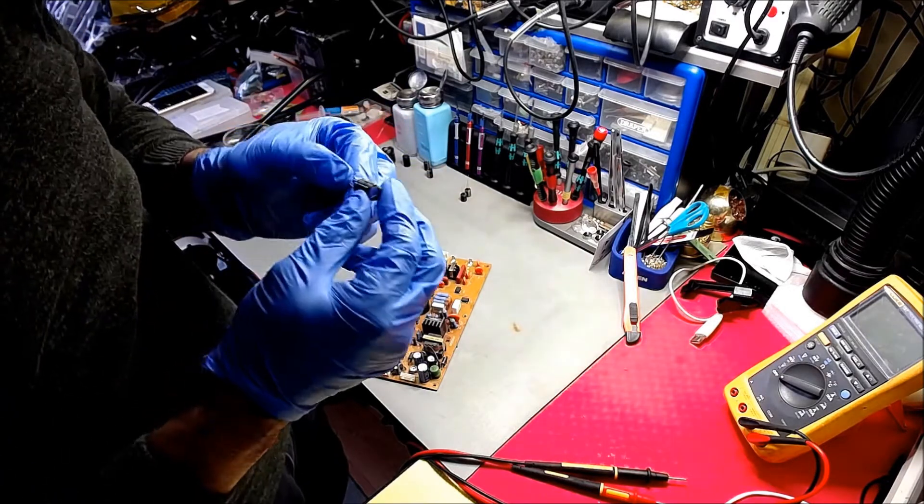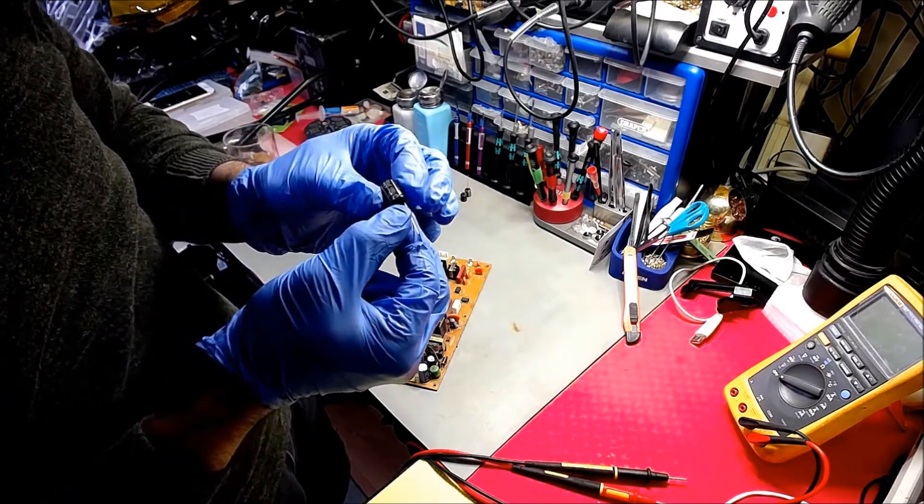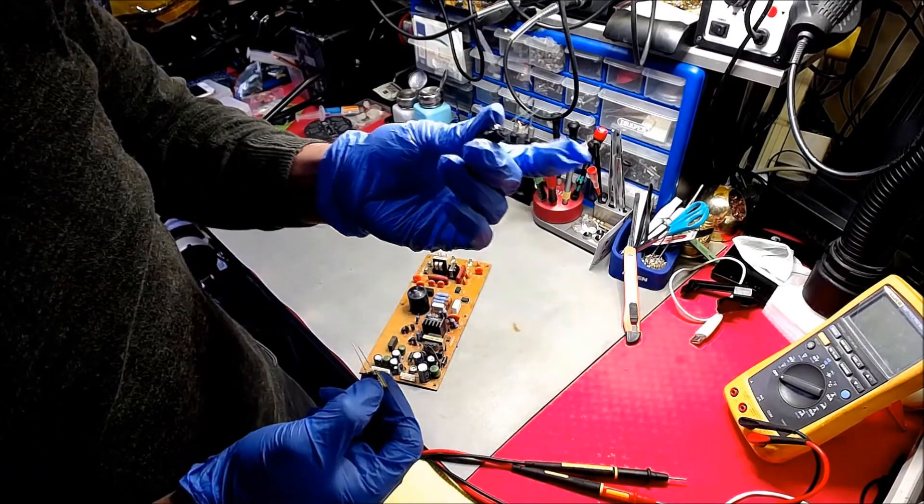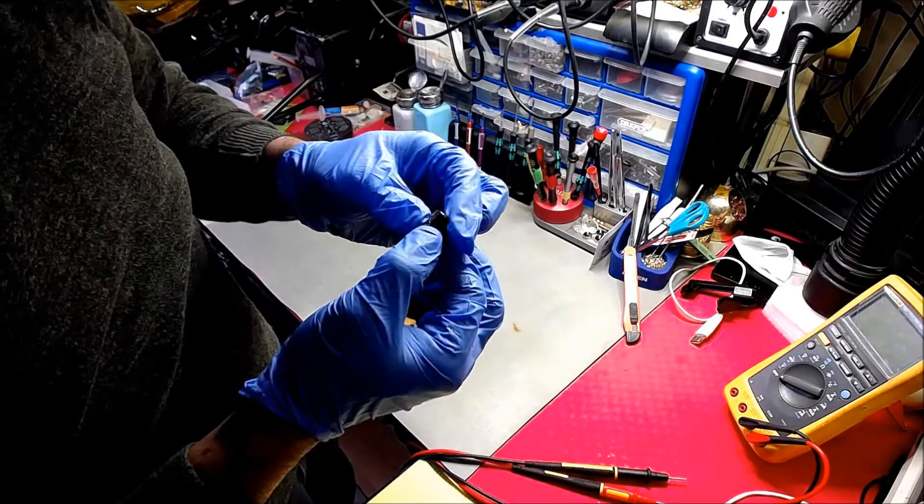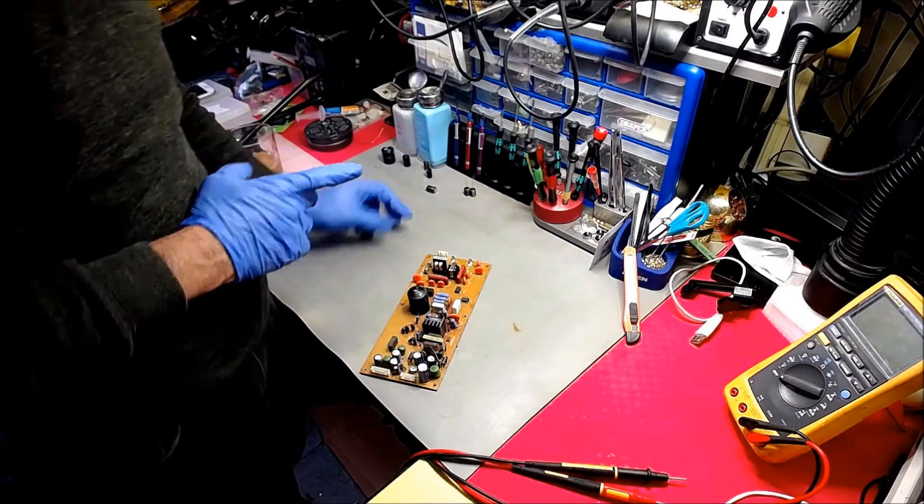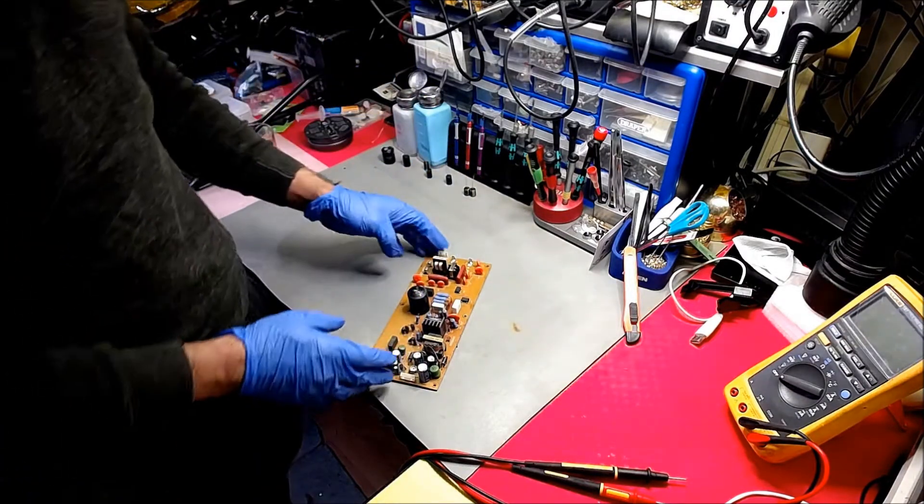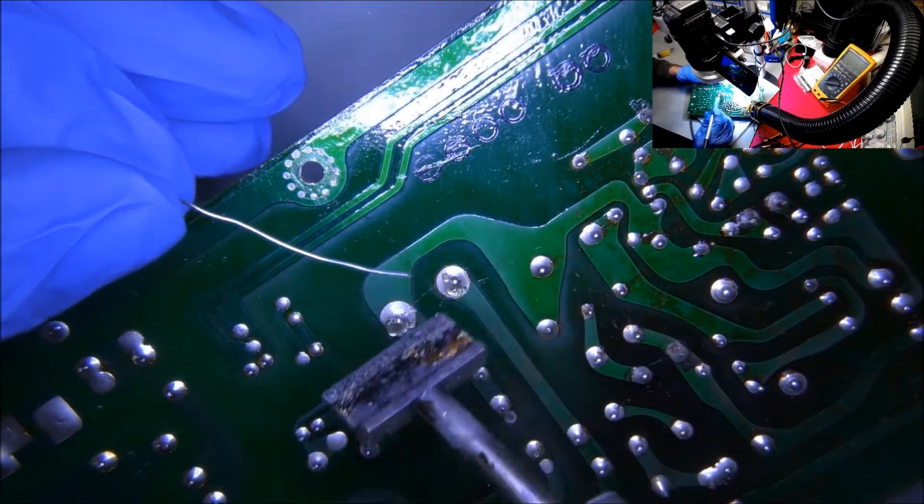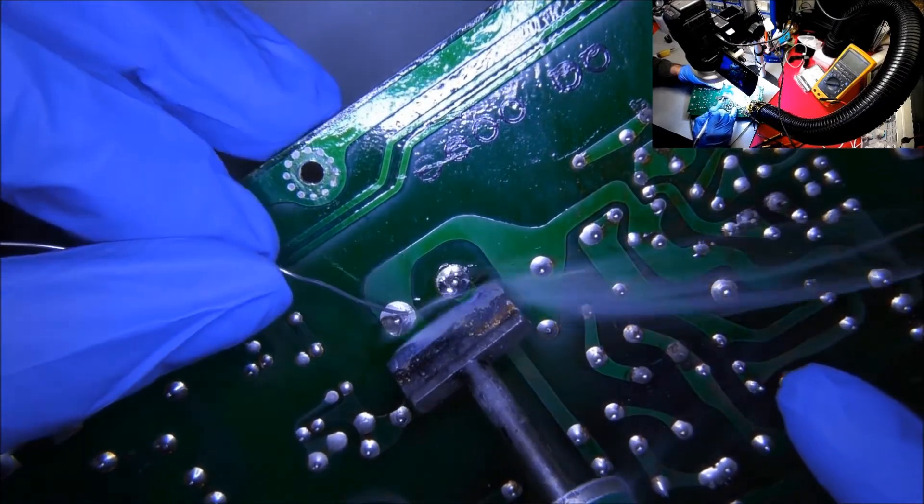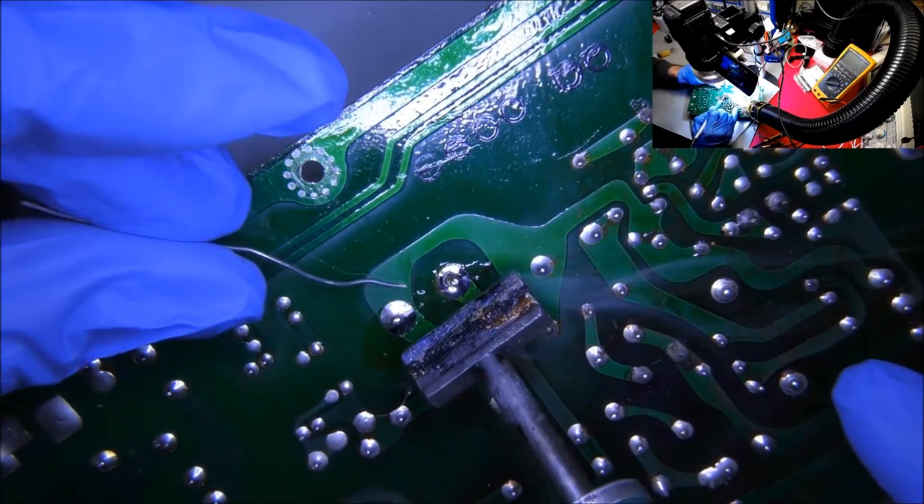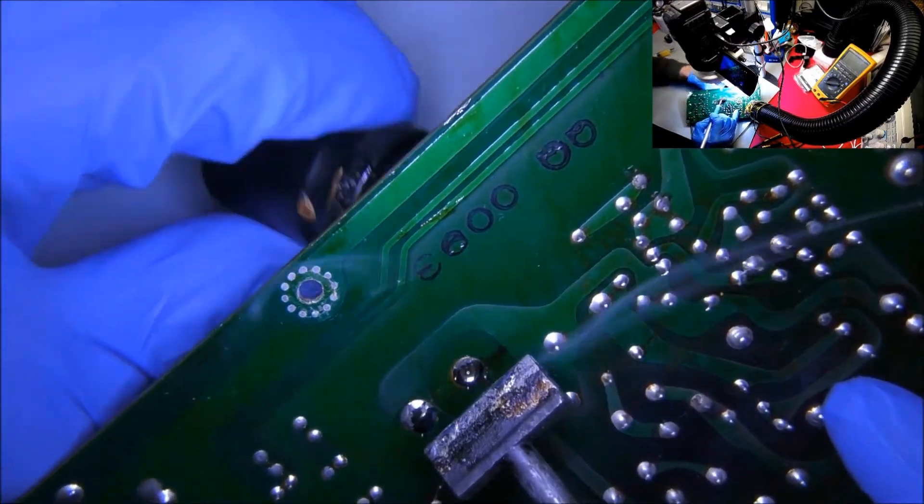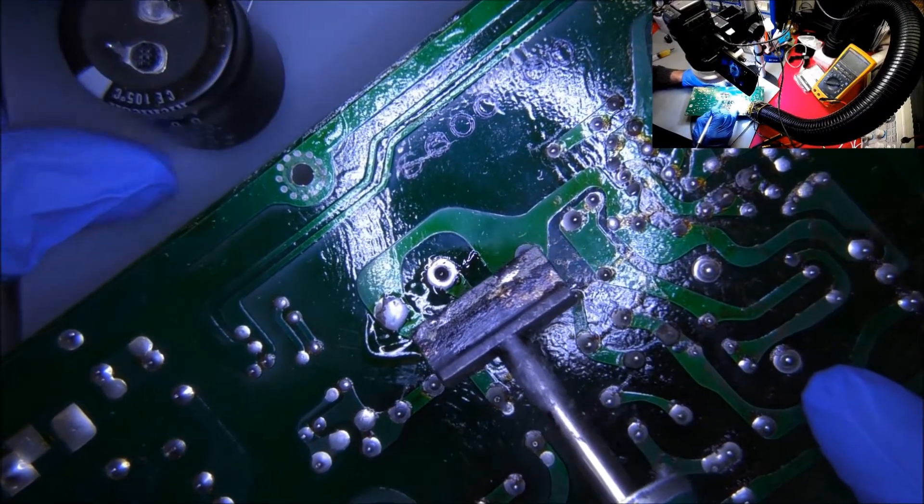Then I have 1000 microfarad 10 volt, and then I have two times 330 microfarad 25 volt, again five mil pitch. These have been ordered from Farnell UK. Low melt solder goes on, and I think this is already leaded solder, that's why it's just coming off with ease.